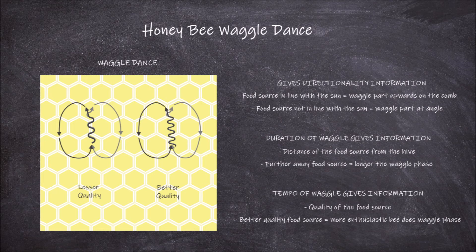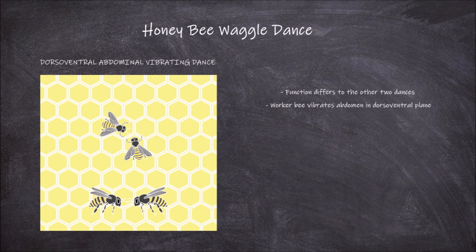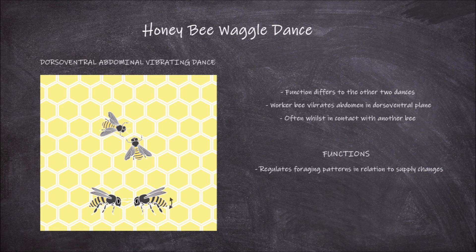The third kind of dance is the dorsal ventral abdominal vibrating dance. The function of this dance differs from the other two dances. This dance involves the worker bee vibrating their abdomens in the dorsal ventral or vertical plane. This is usually done whilst in contact or clasping another bee. The first thing this dance is used for is in regulating foraging patterns in relation to changes in food supply. It is used at times during the day and during the year where there are periods of reduced food supply.